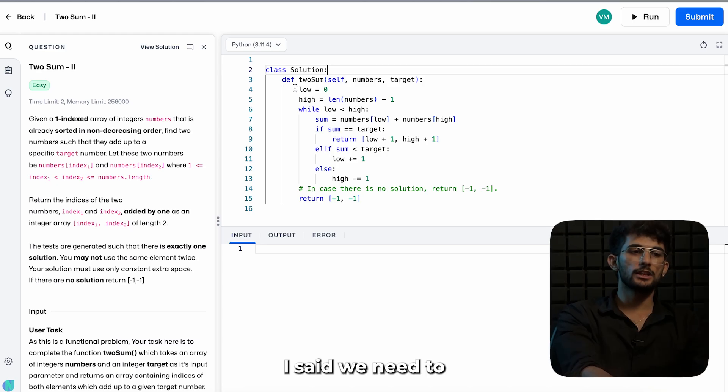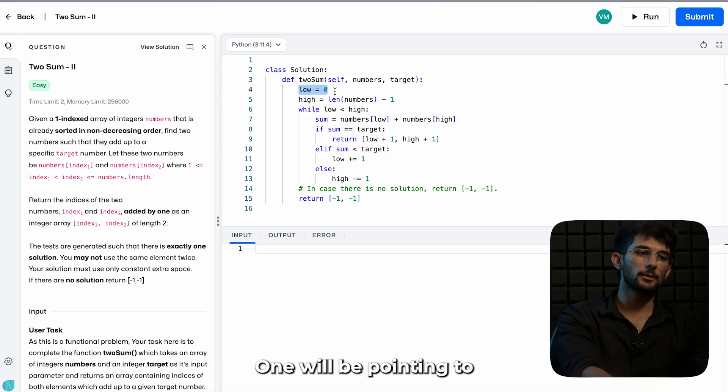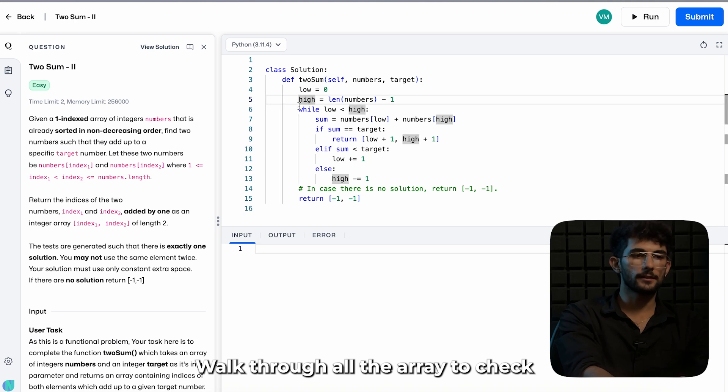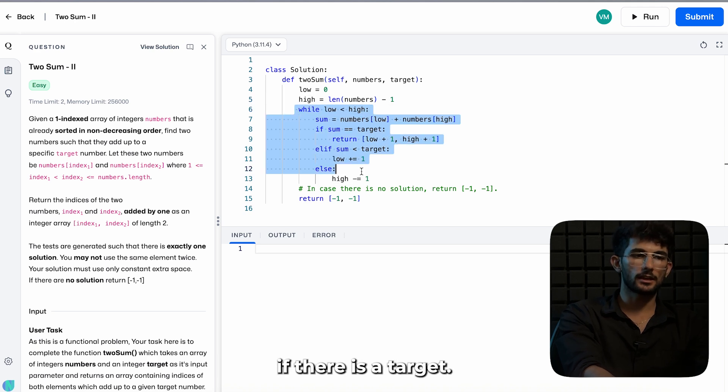So like I said, we need to have two pointers to solve this question. One will be pointing to the start of the array and one will be pointing to the end of the array. We'll walk through all the array to check if there are two numbers which meet the target.